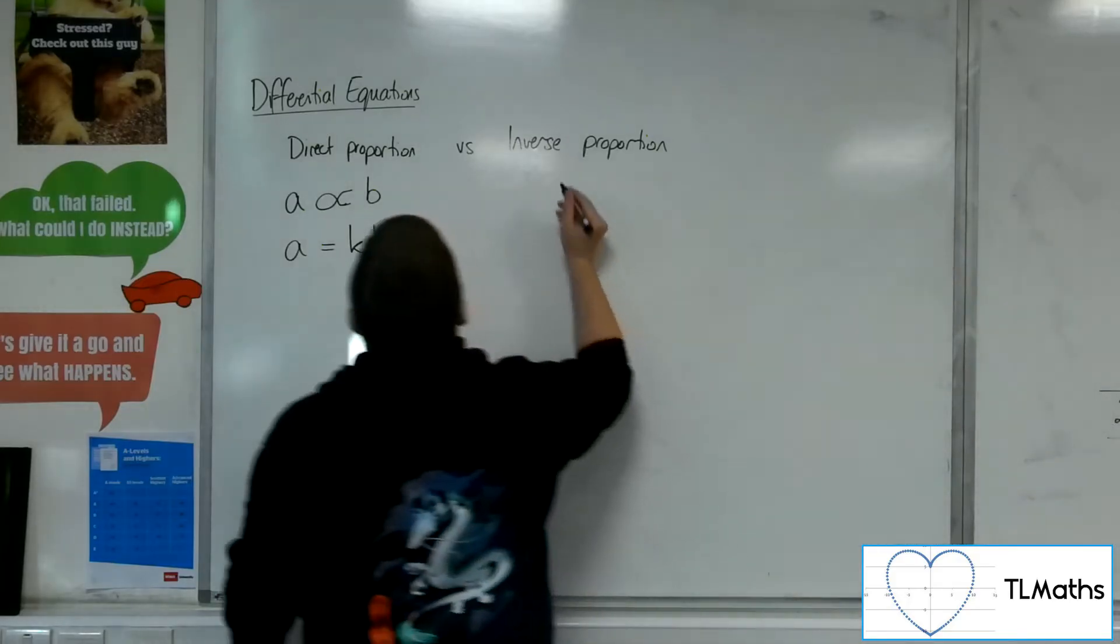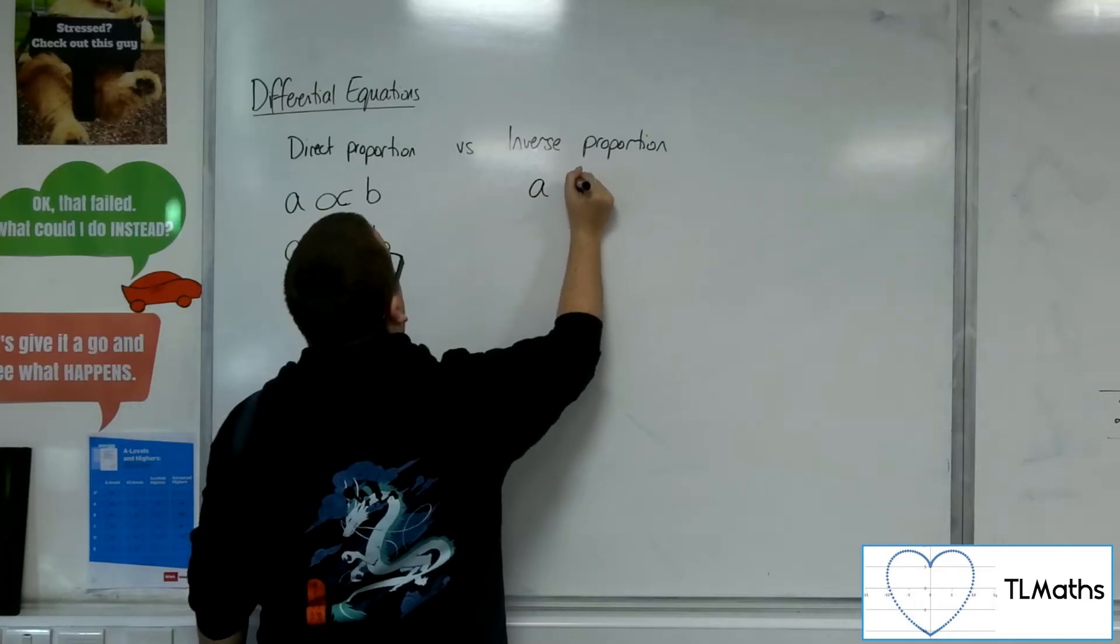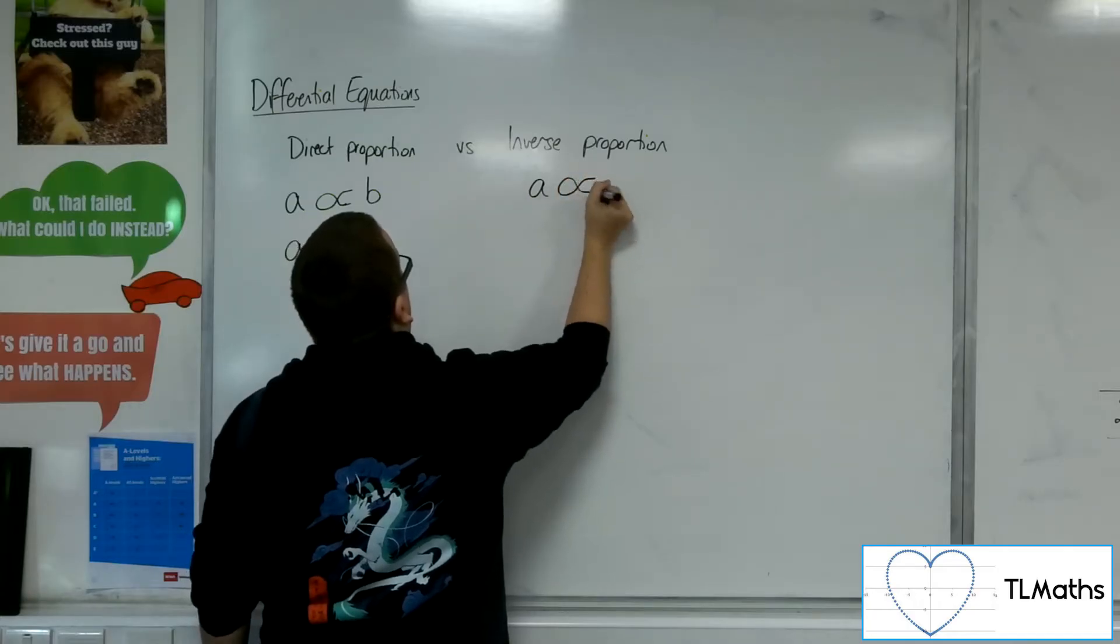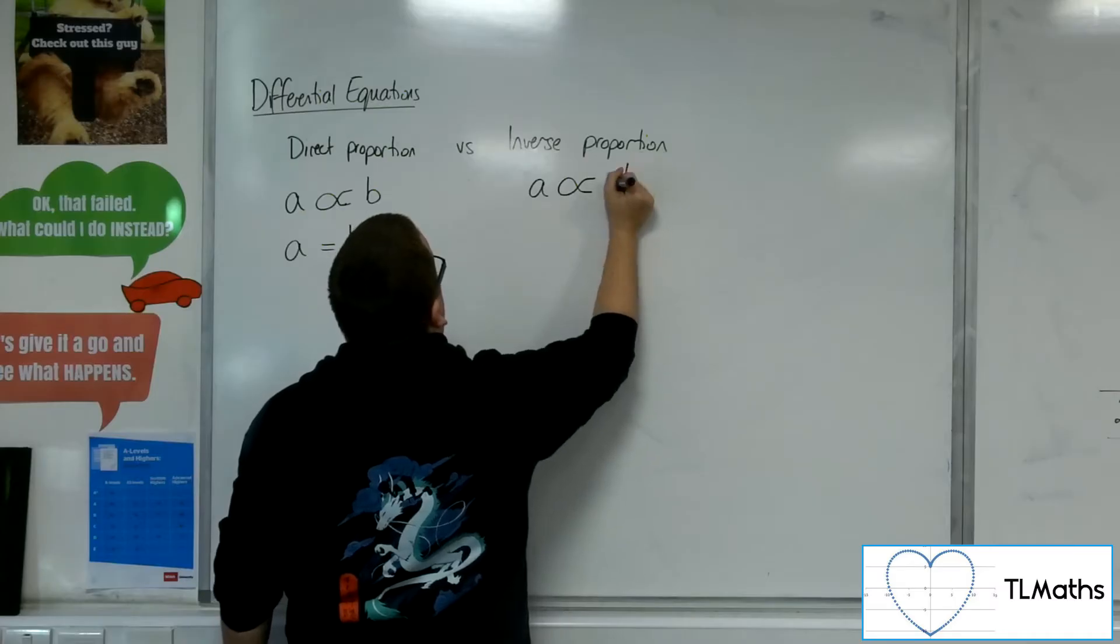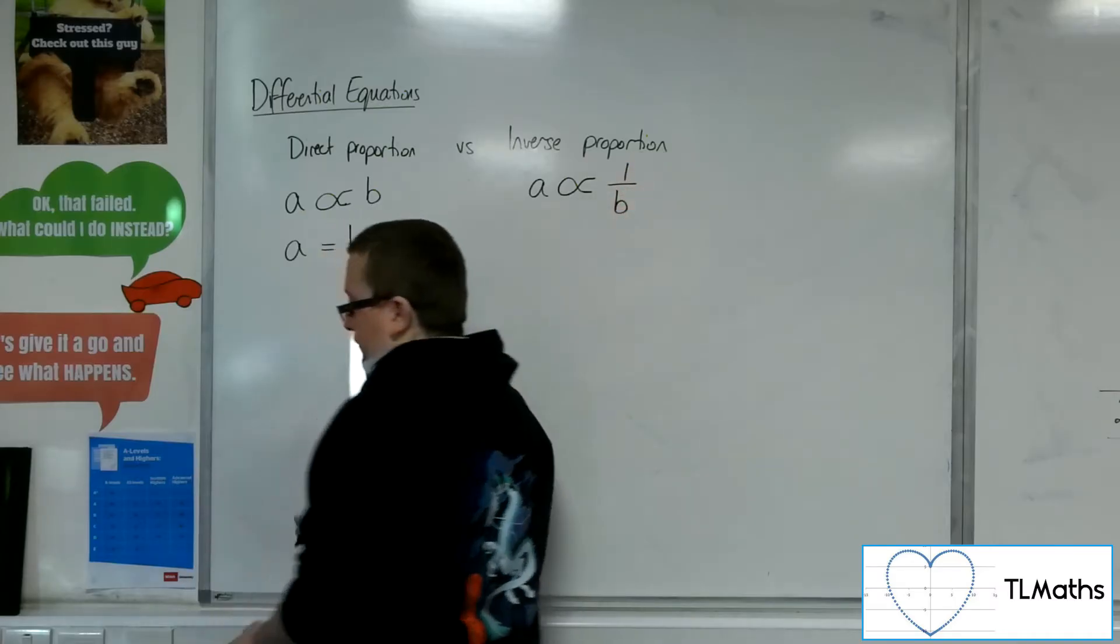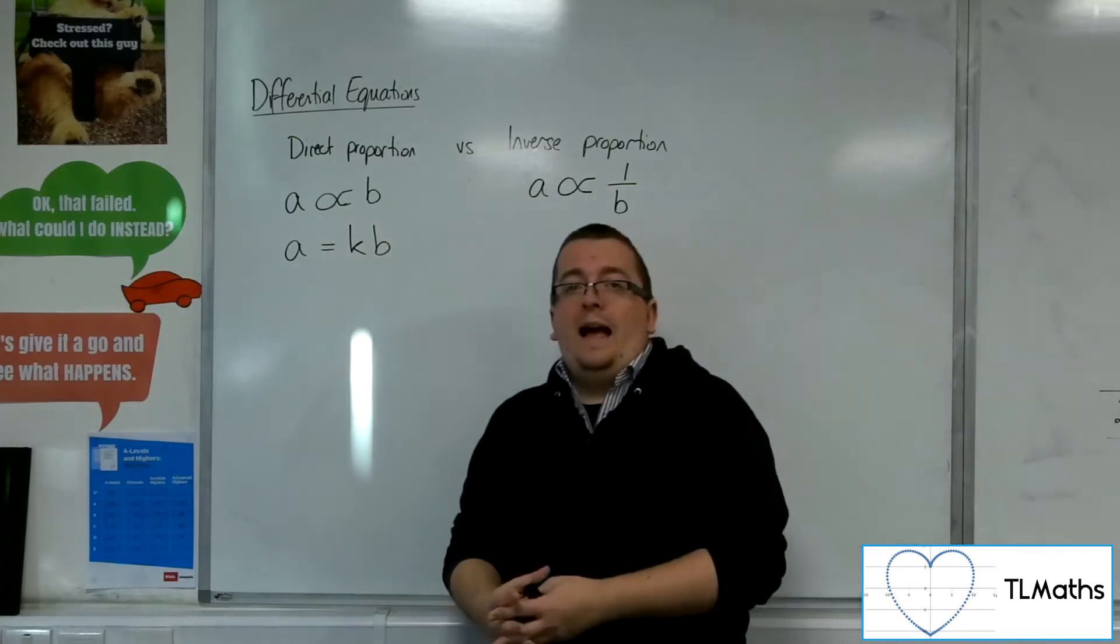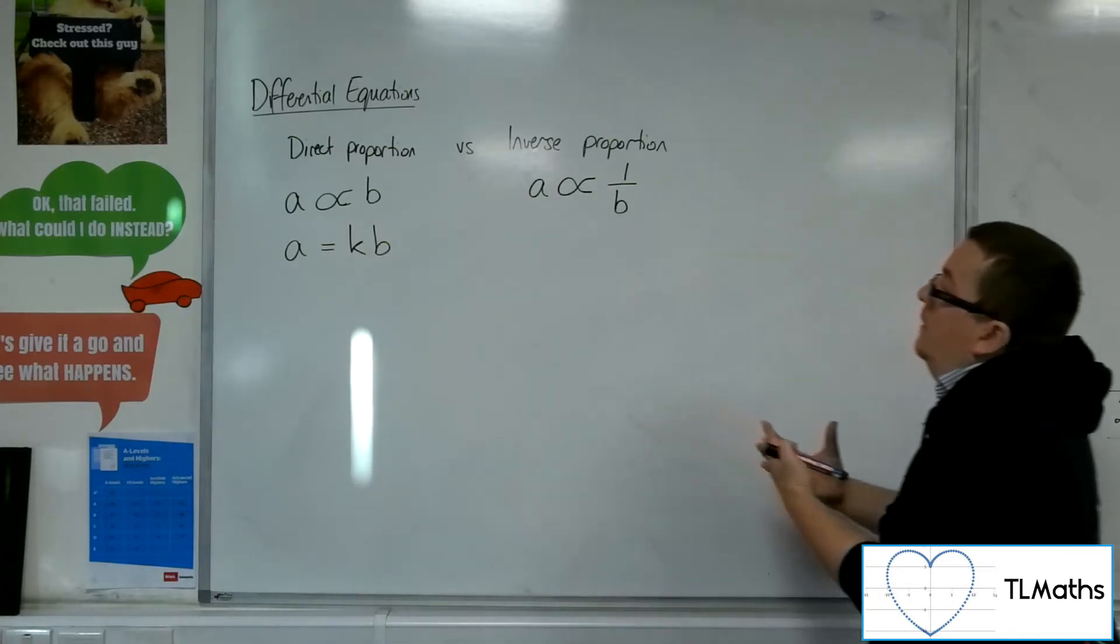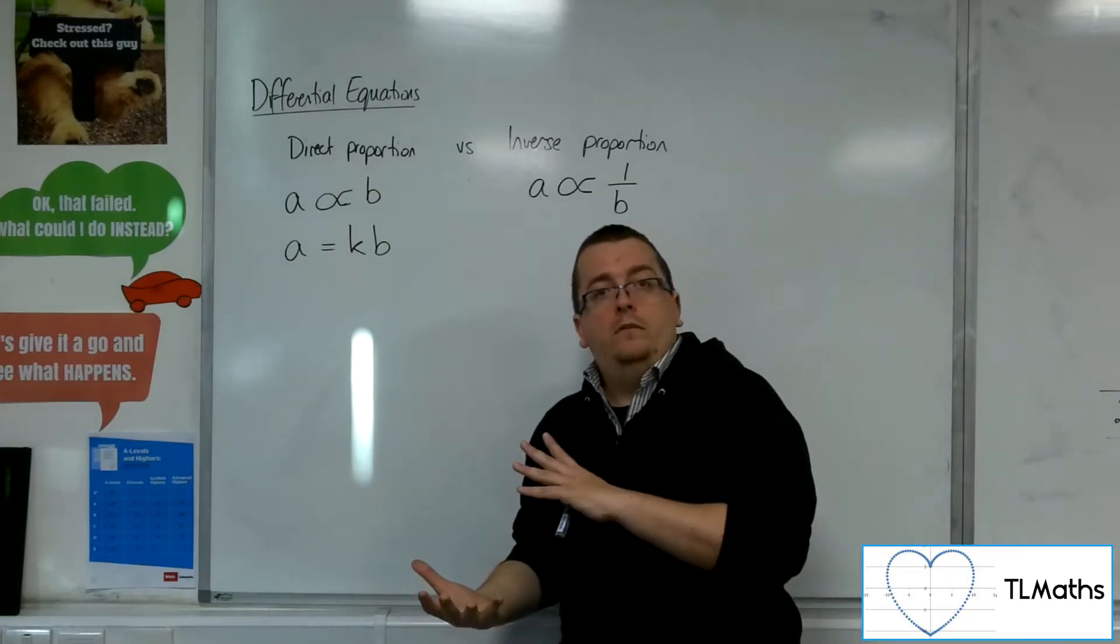If two things are inversely proportional, so let's say A and B are now inversely proportional, then we say that A is proportional to 1 over B. So what this means is that as A gets larger, B will get smaller and vice versa.